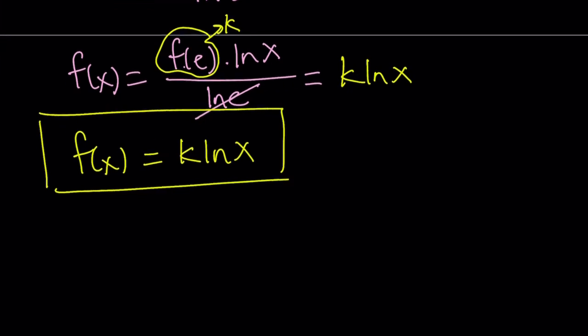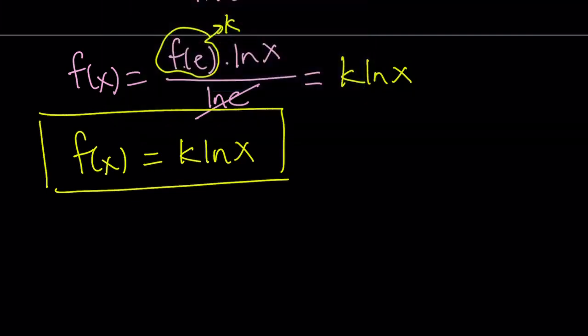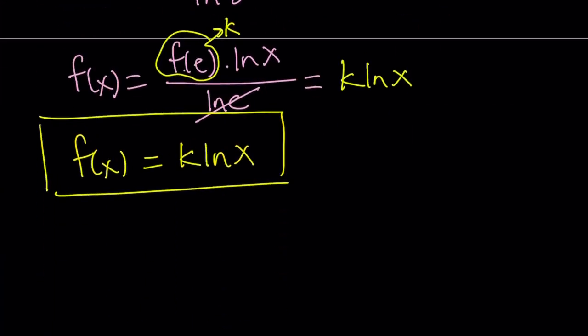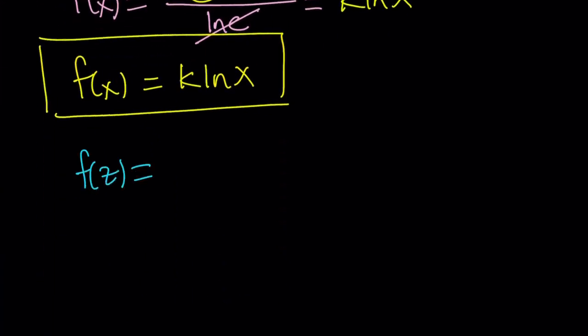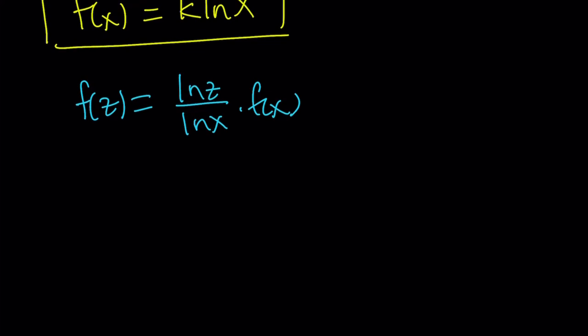But let's go ahead and take a look at the second approach, a slightly different way of approaching this problem. So we got this expression: f of z equals ln z over ln x times f of x. And at this point, I want to do something a little different. I want to put the f's together. So write it as f of z over f of x equals ln z over ln x. Now what does this tell you?